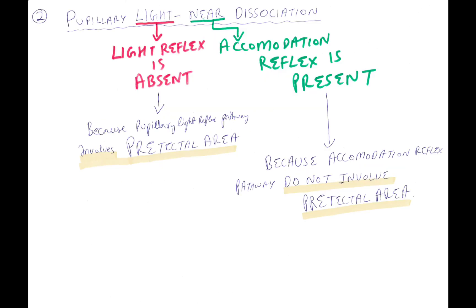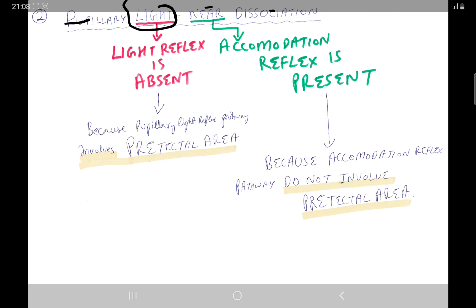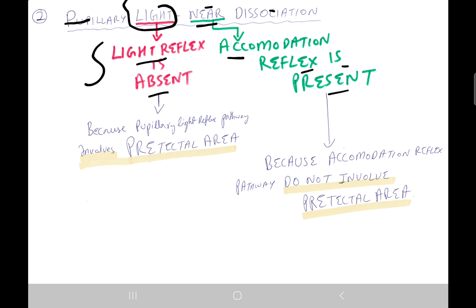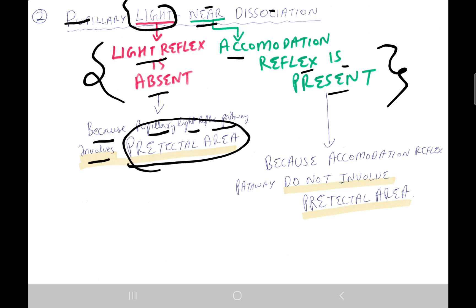Clinical feature number two is pupillary light-near dissociation. Light means the light reflex is absent; near means the accommodation reflex is present. The light reflex is absent and accommodation reflex is present because the pupillary light reflex pathway involves the pretectal area, whereas the accommodation reflex does not involve the pretectal area.